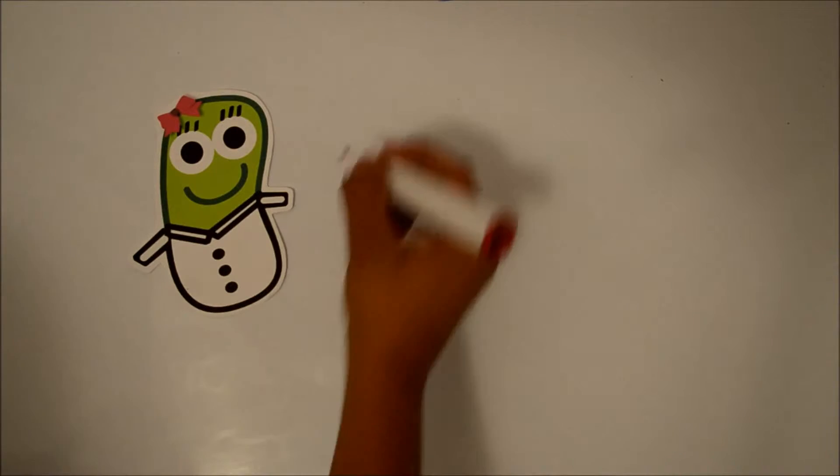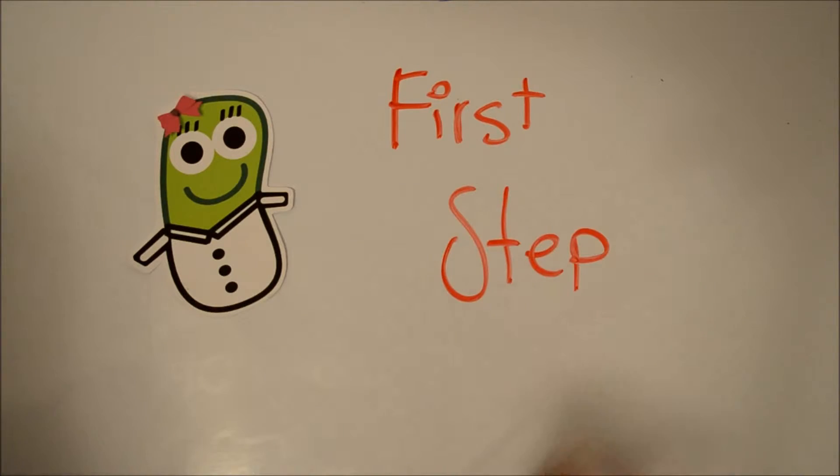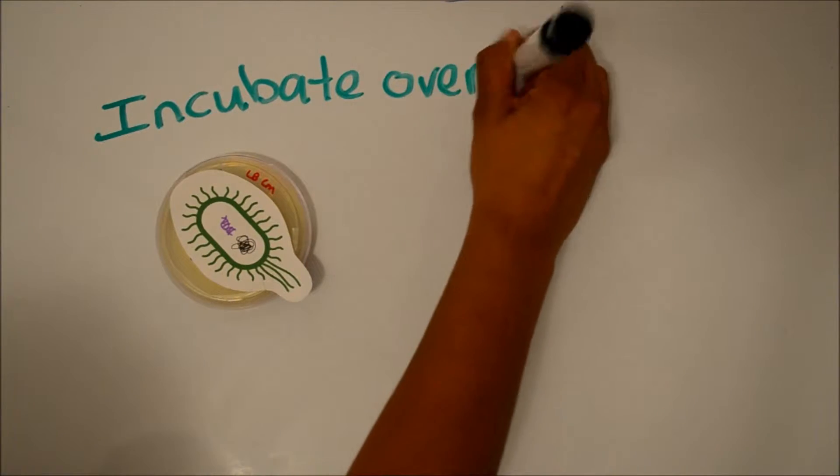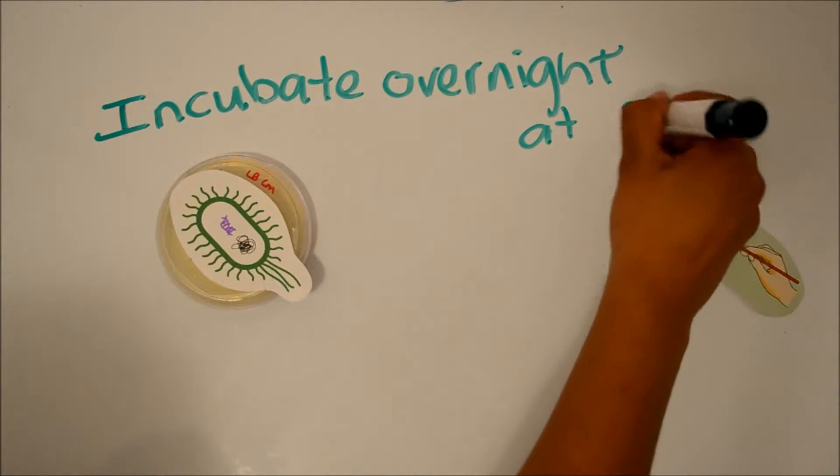This is the first step, the preparation of Bacillus subtilis competent cells. Strike out the strains to be made competent on an L-deep agar plate as a large patch and incubate overnight at 28 degrees.